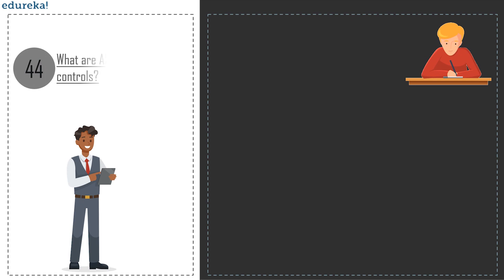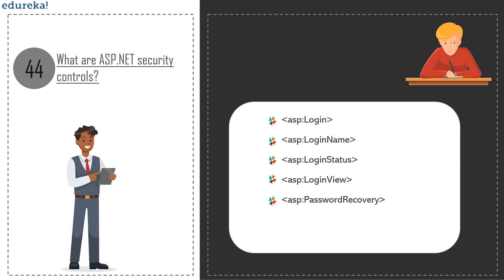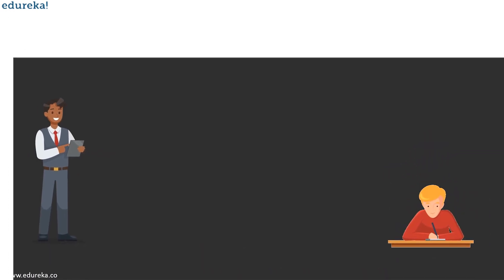Question 44: what are ASP.NET security controls? The security controls in ASP.NET are: Login (provides login capability for users to enter credentials), LoginName (displays the name of the logged-in user), LoginStatus (displays whether the user is authenticated), LoginView (provides various login views depending on the selected template), and PasswordRecovery (emails users their lost passwords).